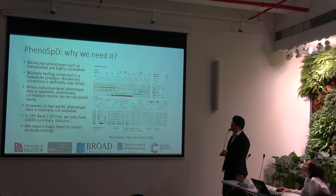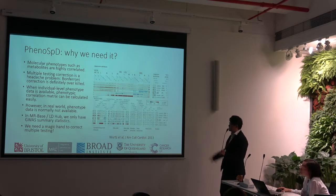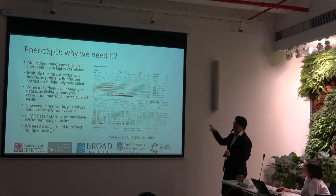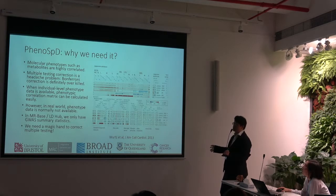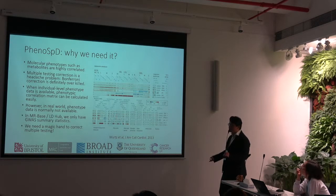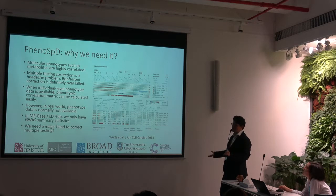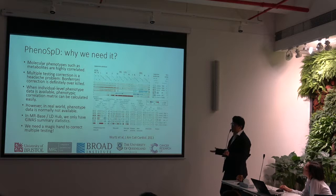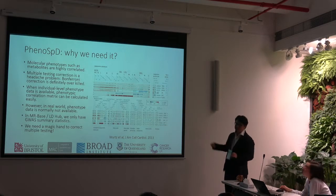Going back to our main focus — PhenomeSPD — why do we need it? A paper by Peter Würtz four years ago showed that molecular phenotypes such as metabolites are highly correlated to each other. If you want to do a phenome-wide association analysis, multiple testing is a headache. Using Bonferroni correction is definitely overkill. With individual-level phenotype data it's simple — you just correlate all the phenotypes together and correct for those correlations. But the reality is we only have GWAS summary results from MRBase and LDHub, so we need a method to correct for multiple testing.